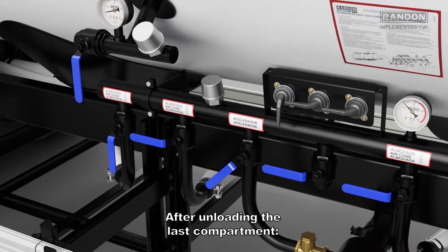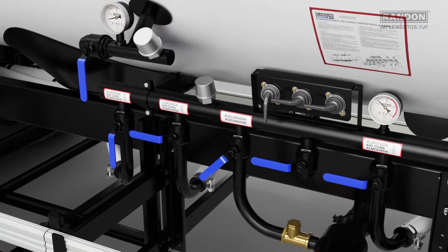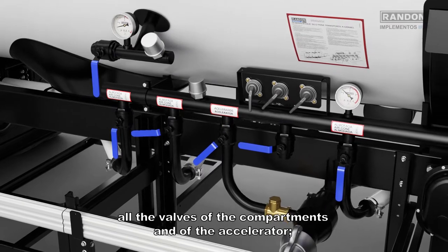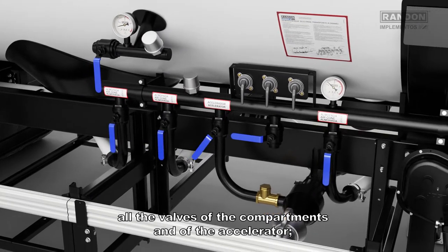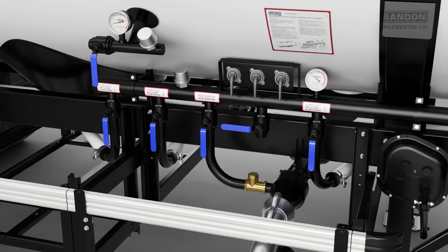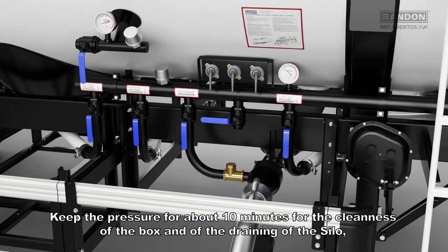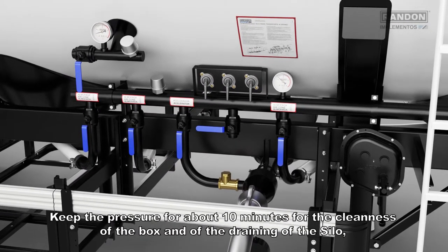After unloading the last compartment, open all the rotating valves, all the valves of the compartments and of the accelerator. Keep the pressure for about 10 minutes for the cleanness of the box and of the draining of the silo.